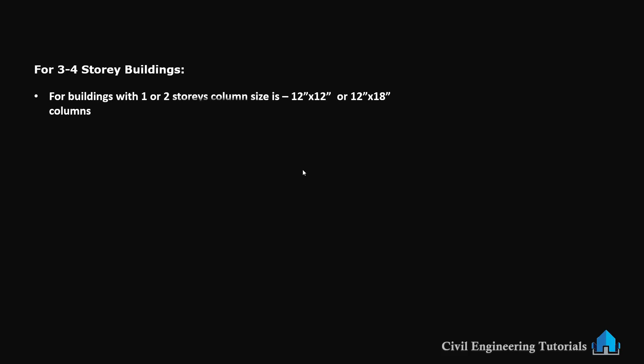Now for 3 to 4 storey buildings, as the number of storeys increases, so does the load on the column. We need larger columns to support the additional weight. Typically we use 12 inch by 12 inch or 12 inch by 18 inch columns for this type of structure.